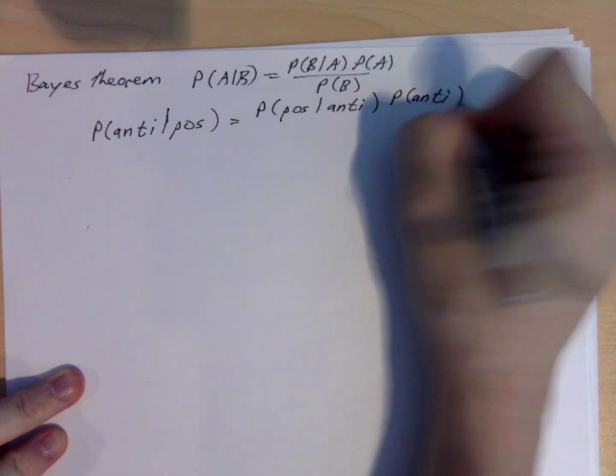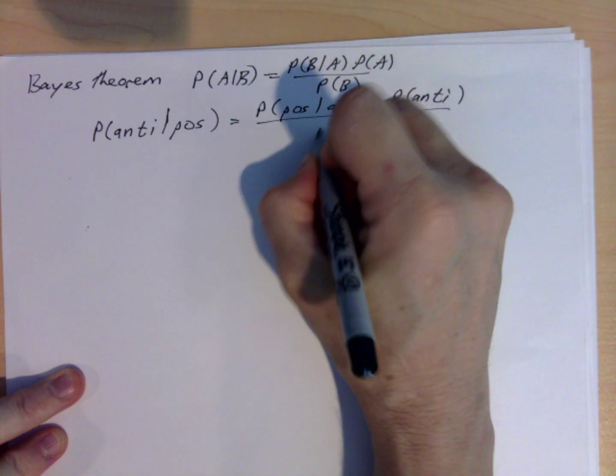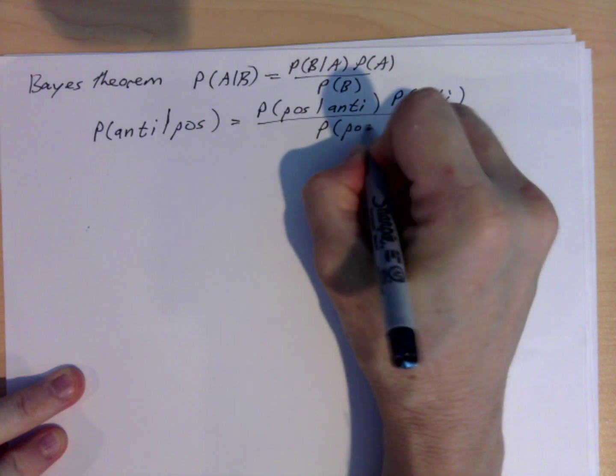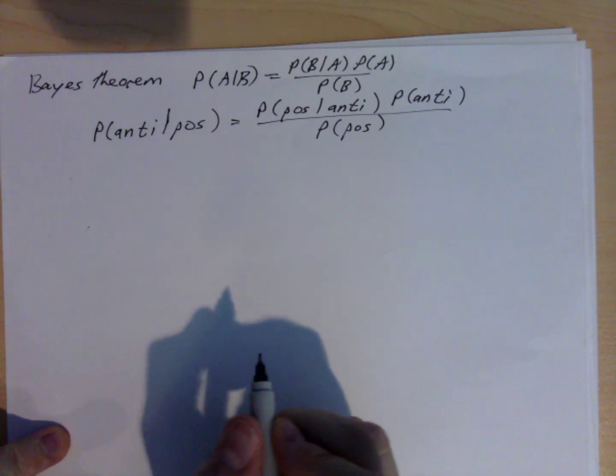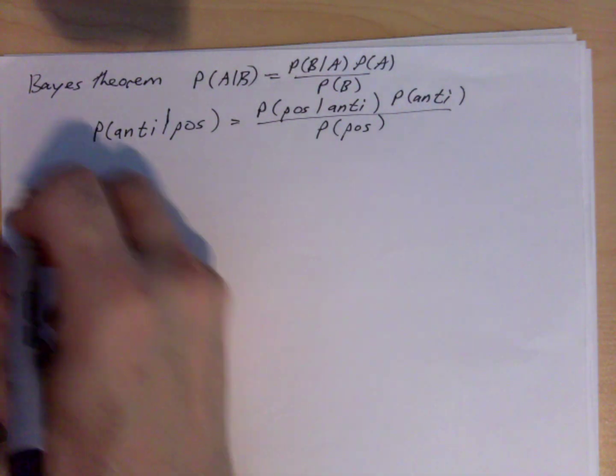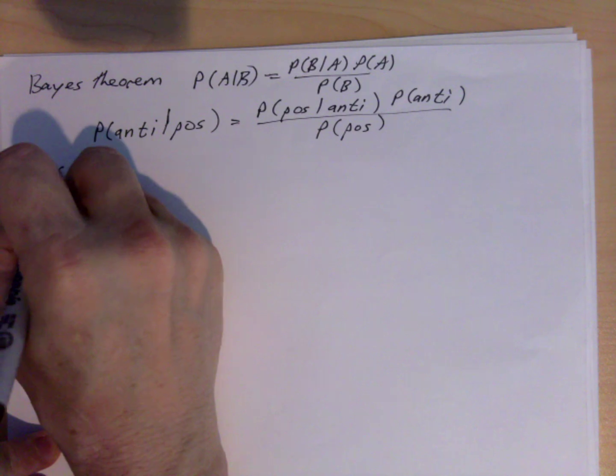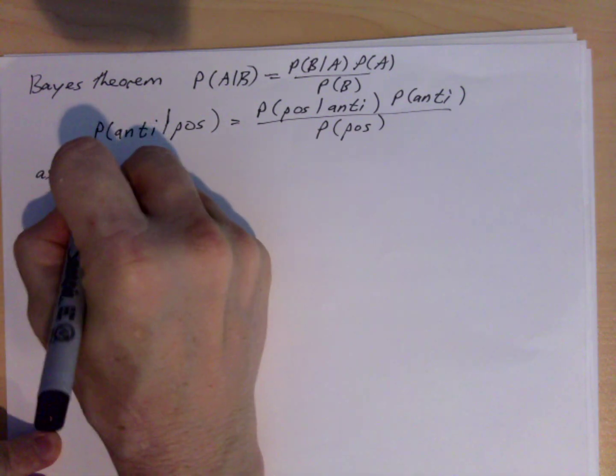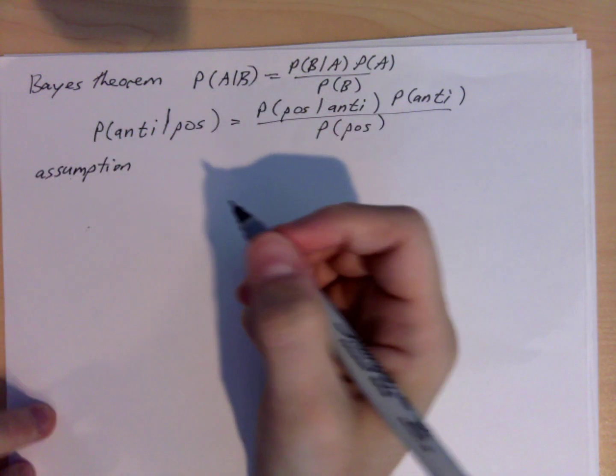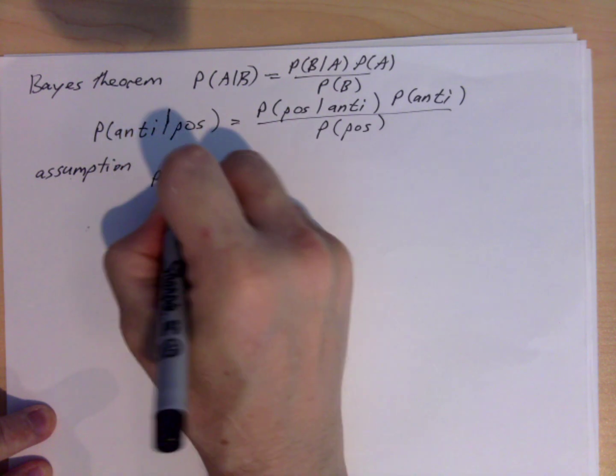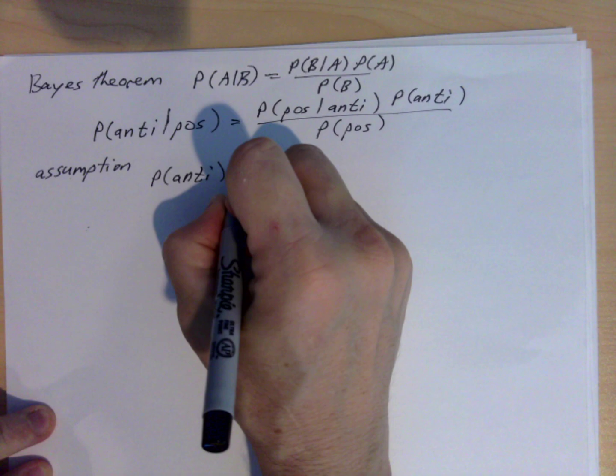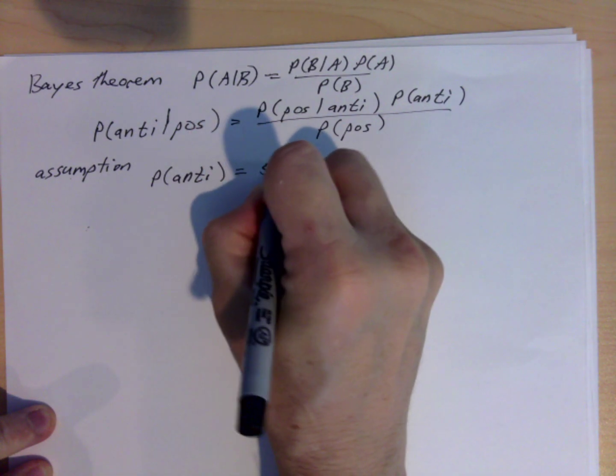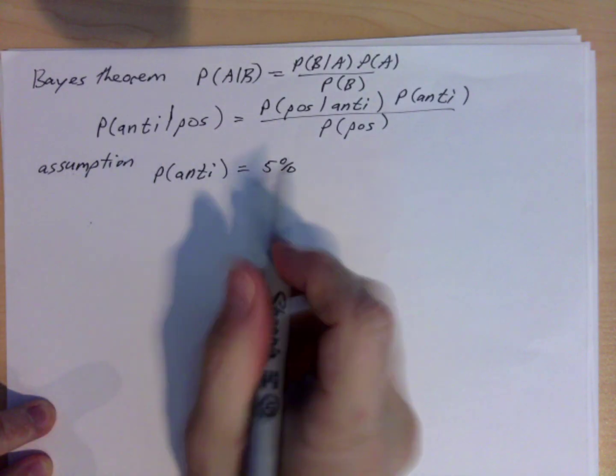So in the paper they give an assumption that the probability that a person actually has antibodies is about 5%, and that's based upon the fact that there aren't a lot of people in some areas who currently have antibodies from the coronavirus.